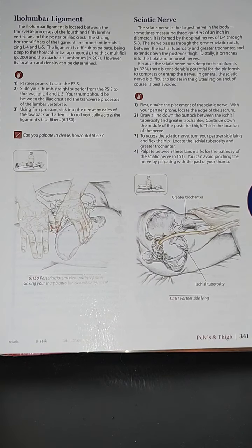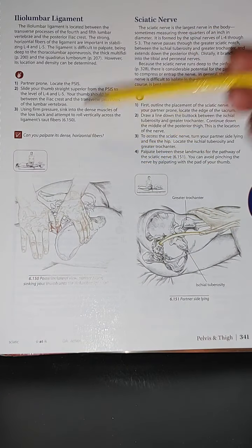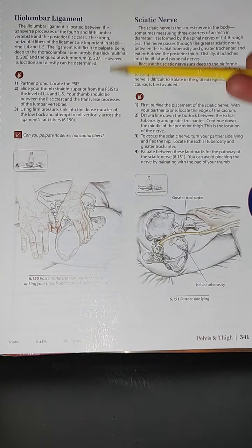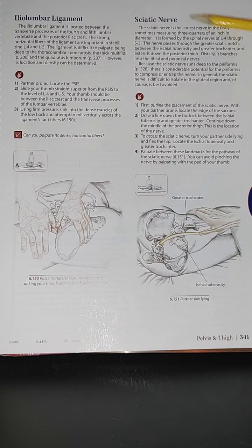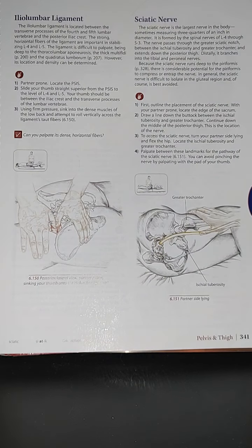Hi guys, so we are at page 341 still featuring Trail Guide to the Body, still at pelvis and thigh. This time we're going to be featuring the iliolumbar ligament and sciatic nerve.